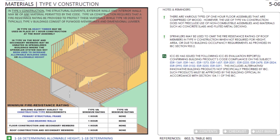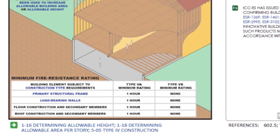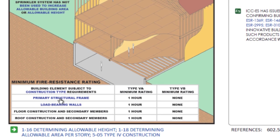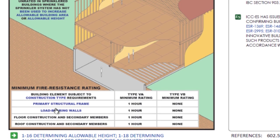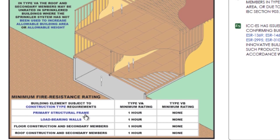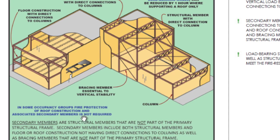Type 5A construction is characterized by combustible materials, frequently dimensional lumber, and specific elements are required to have a fire resistance rating as shown in this table. One such element is primary structural frame, and it's also in blue text. So you can see how we are interconnecting ideas without a lot of searching or having to know in advance where to find more detail or related materials. This shows how to determine if a member is primary structural frame or if it is categorized as a secondary member.